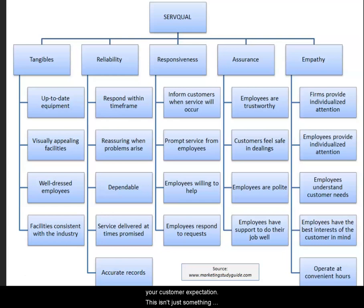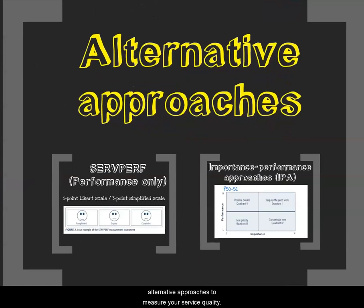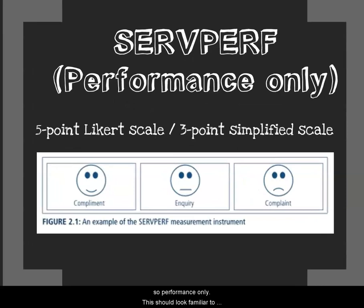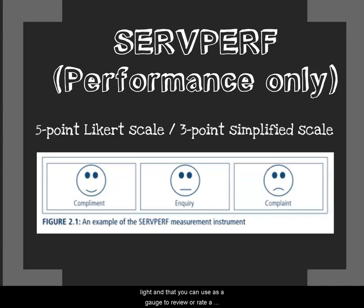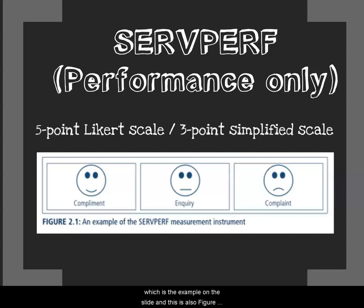This isn't just theory — it is actually being implemented in real service organizations. There are also two alternative approaches to measure service quality. The first is SERVPERF — performance only. You can think of it like a robot system: green, orange, or red light used as a gauge to rate a service organization on a five-point scale. A three-point simplified scale is also shown in Figure 2.1 on page 50, where customers circle a face to rate the service. Another way is the importance-performance approach, covered on pages 50 to 51 — read through what each quadrant means.